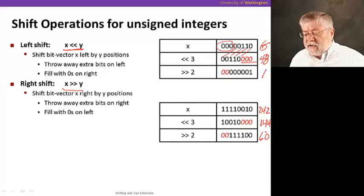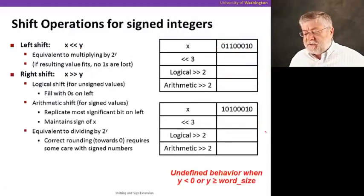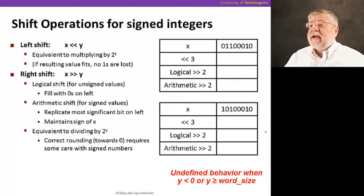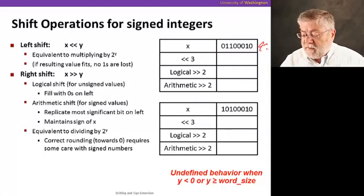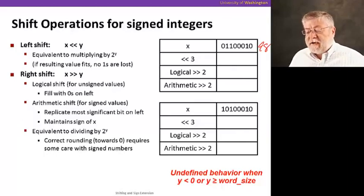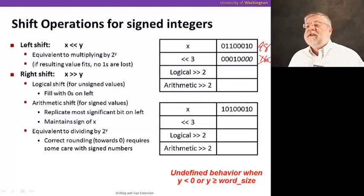Let's take a look now at signed integers. It's a little bit different situation. Here I'm showing a signed integer that's equivalent to the number 98. And we're going to left shift it by three, multiply by eight. Again, this is way too big a number. We're going to get a result that is equivalent to 16, which is wrong, of course, because we should have gotten 784.